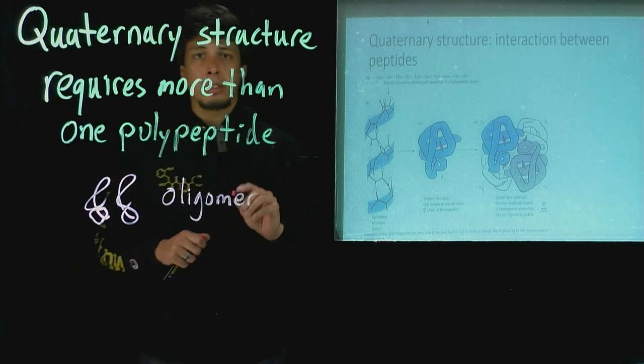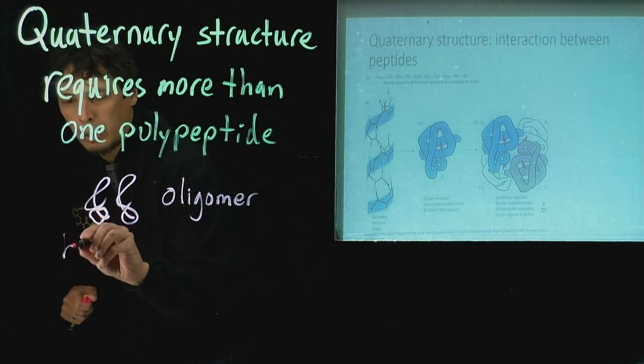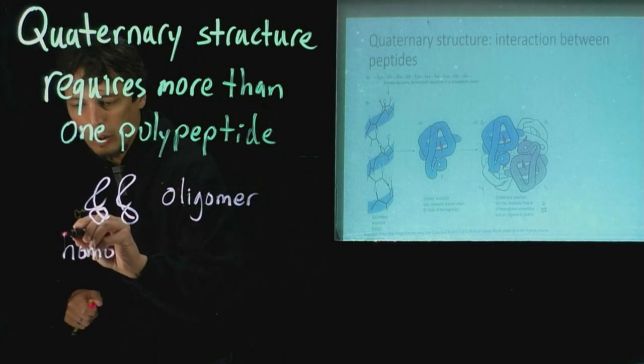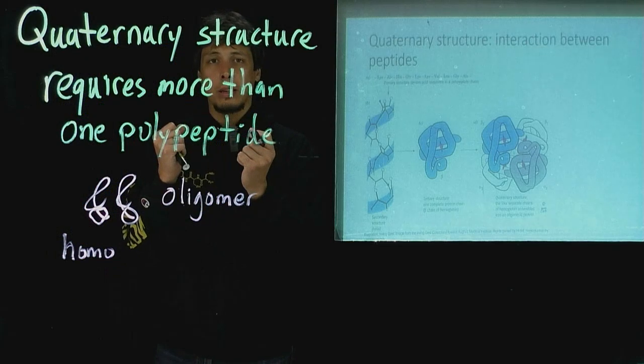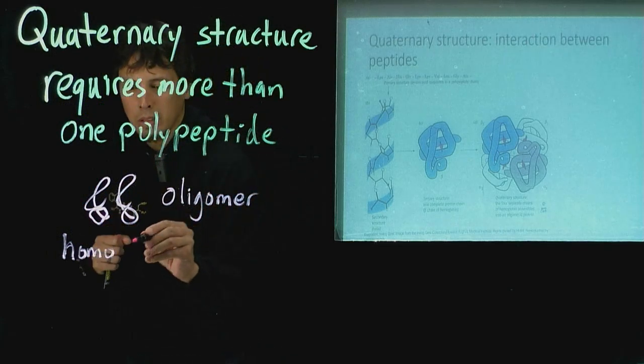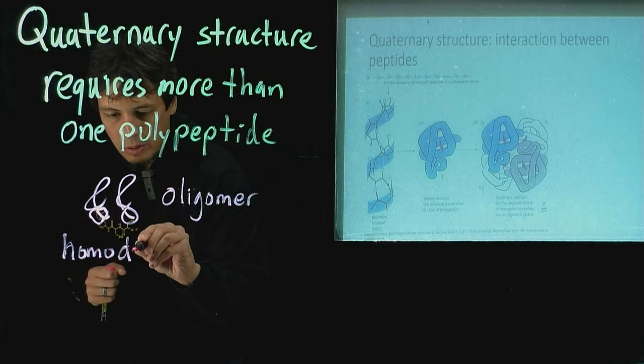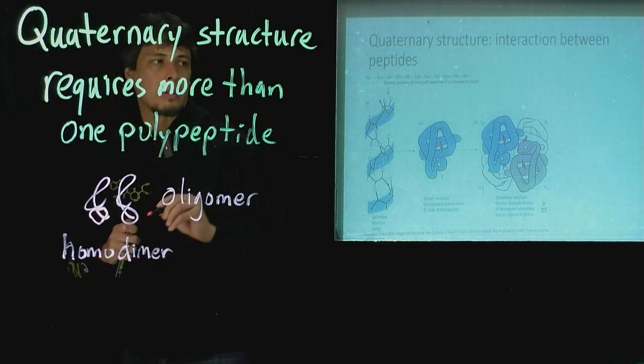The oligomeric state of this is going to be called a homodimer, where the homo is because they're the same - they're the exact same polypeptide sequence. Dimer is because there's two of them.